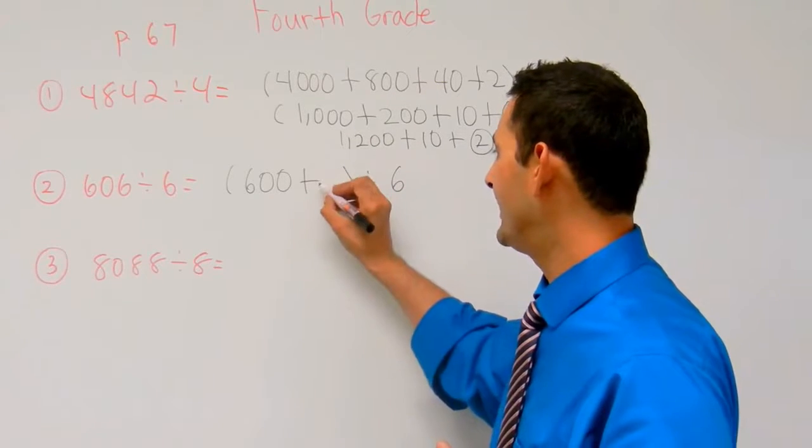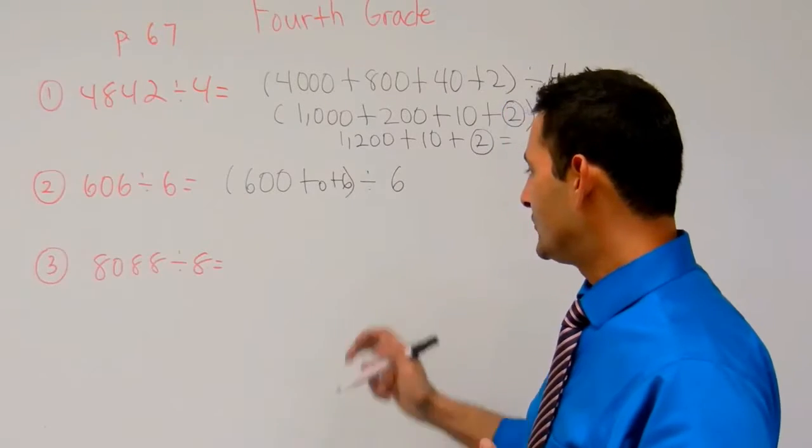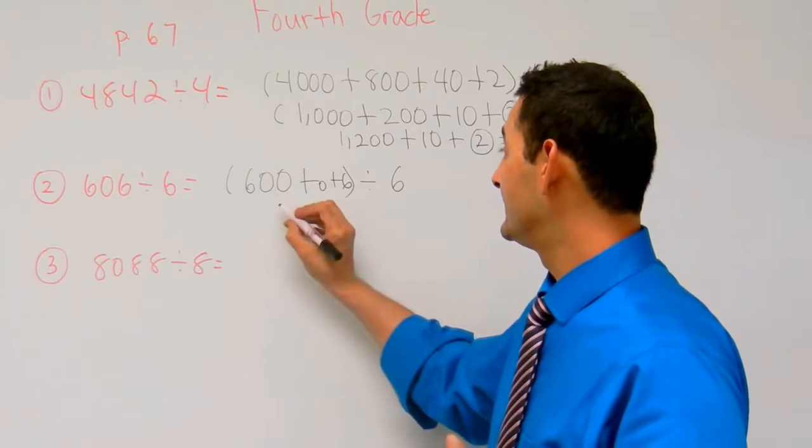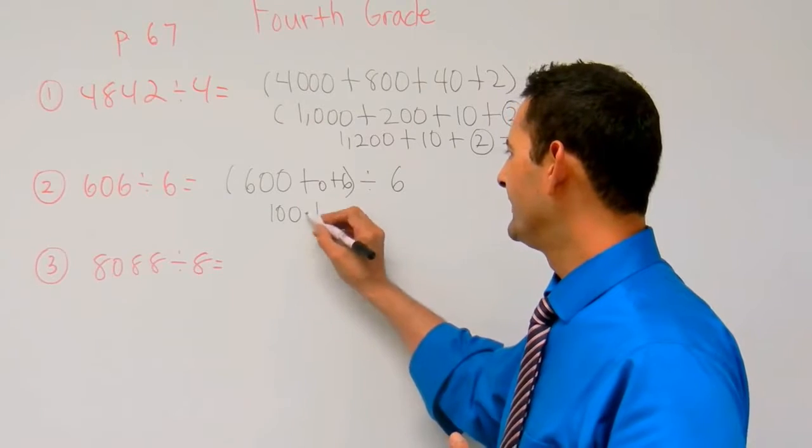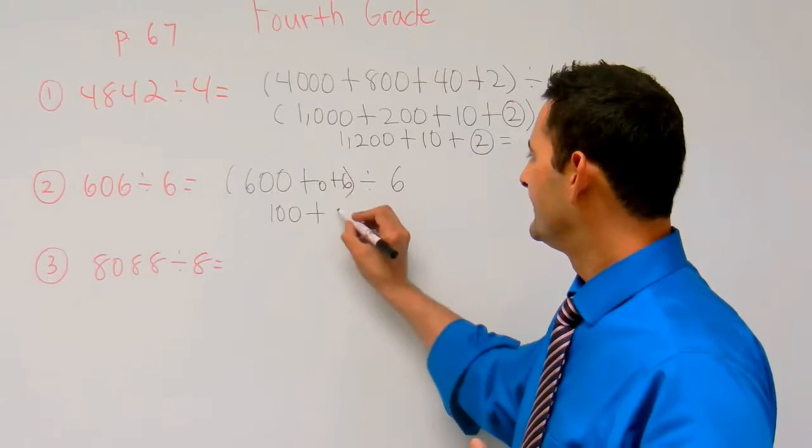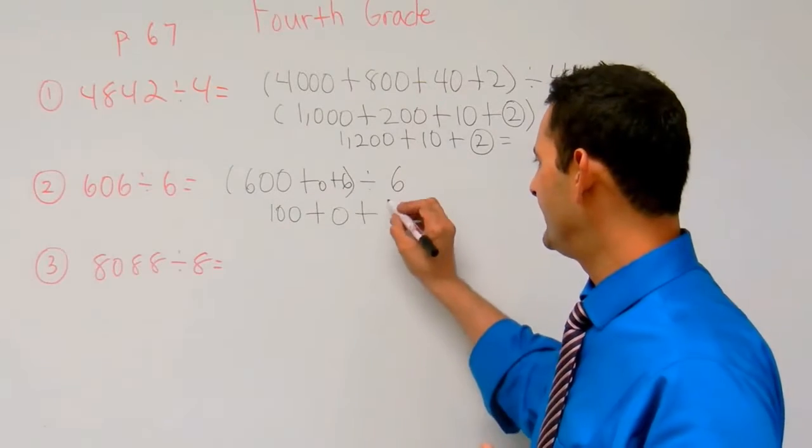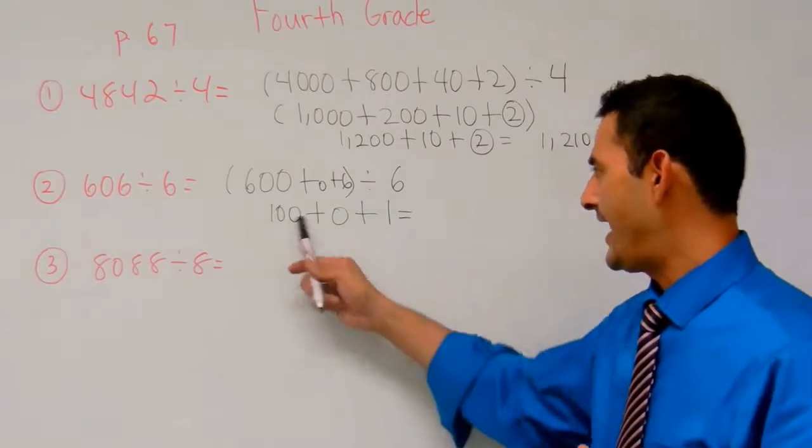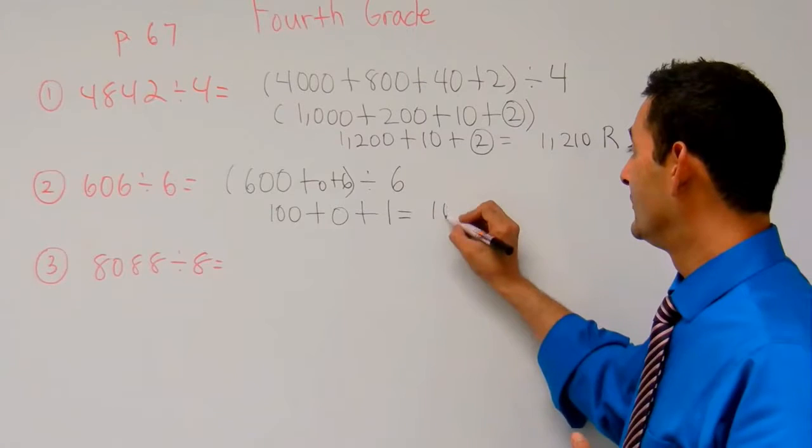I'm going to write that 0 there and a 6 there. So here I have 600 divided by 6, that's going to be 100, plus that's going to be a 0 there, plus 6 divided by 6 is going to be 1.